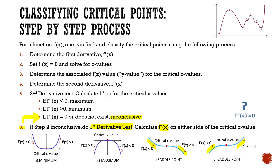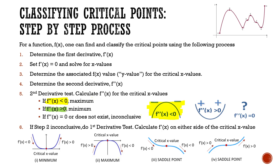To summarize: if our second derivative test is less than zero, we have a maximum. If it's greater than zero, we have a minimum. If the second derivative test gives us zero or does not exist, we don't know if it's a max, min, or saddle point, and we go to step 6 to determine the characteristic of that critical point.